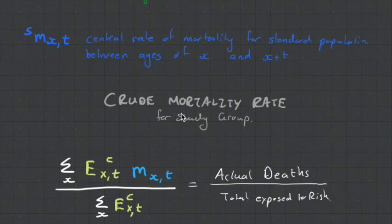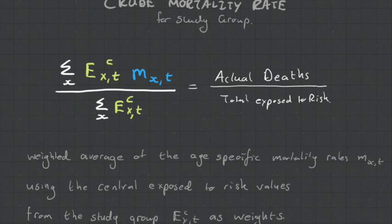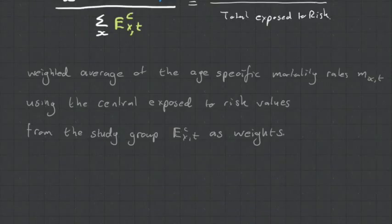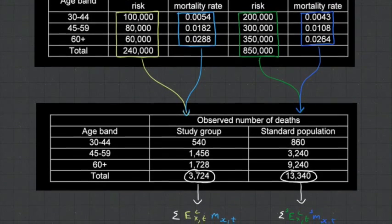This is the crude mortality rate, and this is very simply the actual deaths divided by the total exposed to risk. What's nice about this is it gives a weighted average of the age-specific mortality rates. So if town A has a crude mortality rate of 10, and town B has a crude mortality rate of 2, then town A has 5 times heavier mortality. The calculations are very straightforward, and we get our answer.